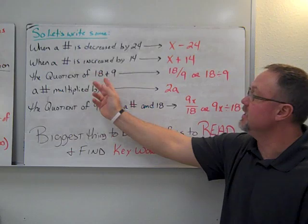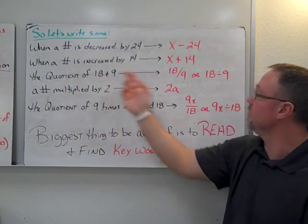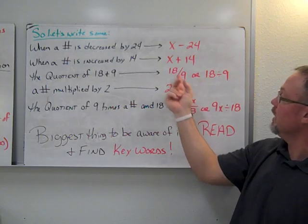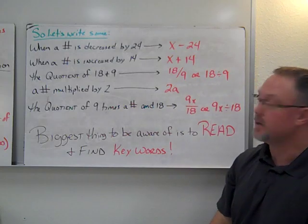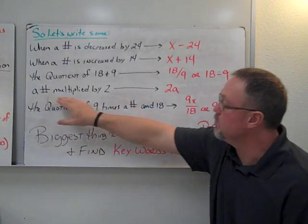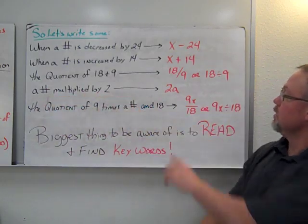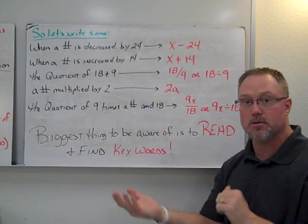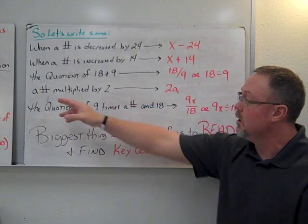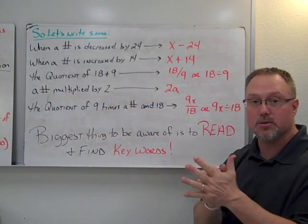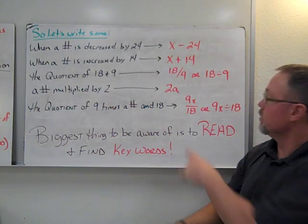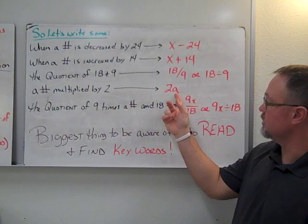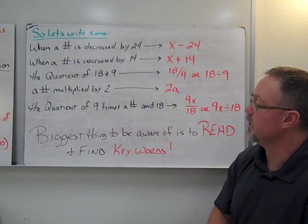'The quotient of 18 and 9' — quotient means division — so you can write it two ways: 18 over 9, or 18 divided by 9. For 'a number multiplied by 2,' this is simply 2a. When you have a letter and a number right next to each other, that means multiplication, so you don't need a dot or parentheses unless you're substituting in for that letter.